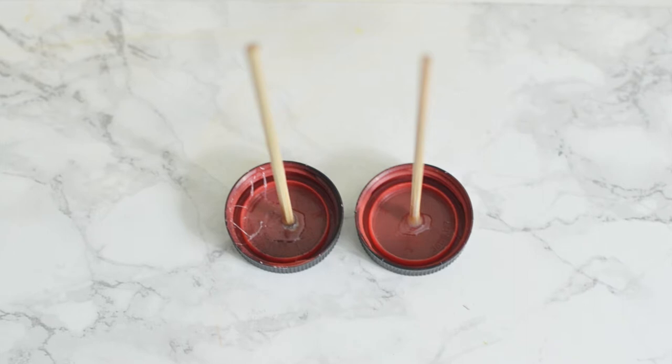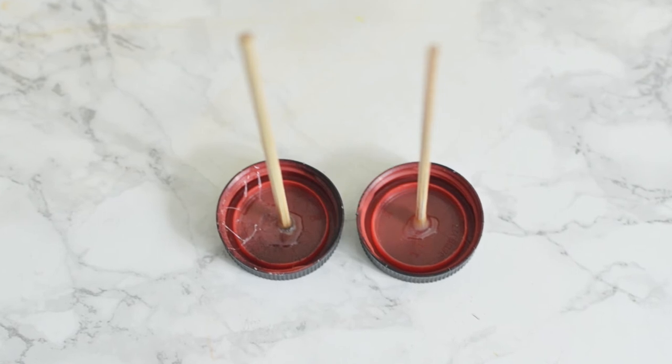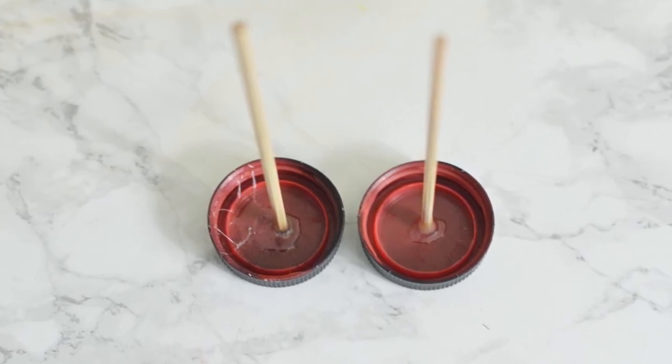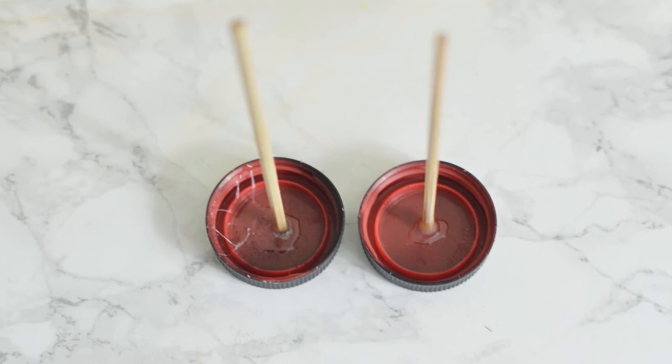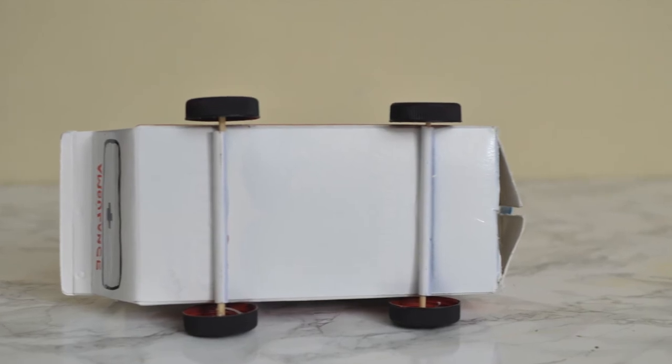Now let's tackle the wheels part. To do this, take the caps with skewers attached that we kept for drying in the beginning. Add more hot glue to make it stronger, insert it through the straws and repeat the same steps to secure the wheels on the other side. Allow it to dry and the ambulance is now ready to roll.